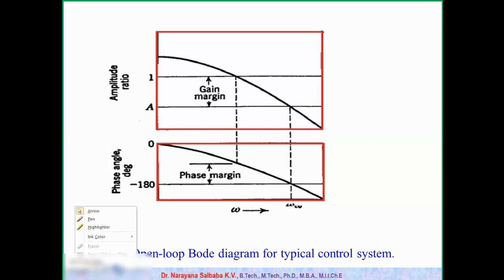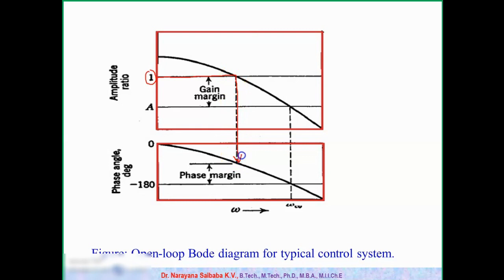Using the same Bode diagram, for finding phase margin we first locate AR equal to 1 on the top plot and draw a horizontal line until it touches the curve. At that frequency, we draw a vertical line downward to the bottom curve, then draw a horizontal line to read the phase angle. The difference between 180 degrees and this phase angle gives the phase margin. If the phase margin is more, the system is more stable; if it is less, the system is less stable.